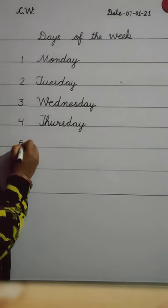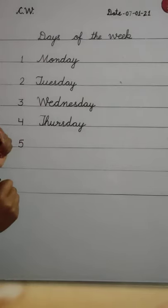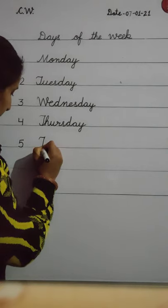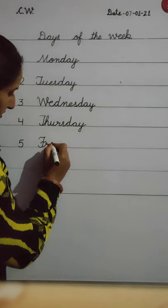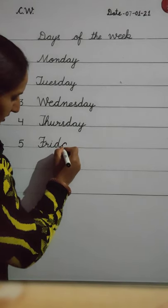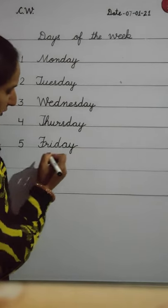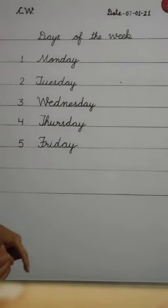Next, number 5. After Thursday, which day comes? The fifth day of the week is Friday. F-R-I-D-A-Y. Friday.